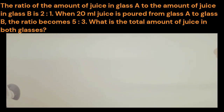Assalamu alaikum, level 6. Today we are going to solve a problem from the chapter on ratio. The question says that the ratio of the amount of juice in glass A to the amount of juice in glass B is 2:1. When 20 ml of juice is poured from glass A to glass B, the ratio becomes 5:3. What is the total amount of juice in both glasses?